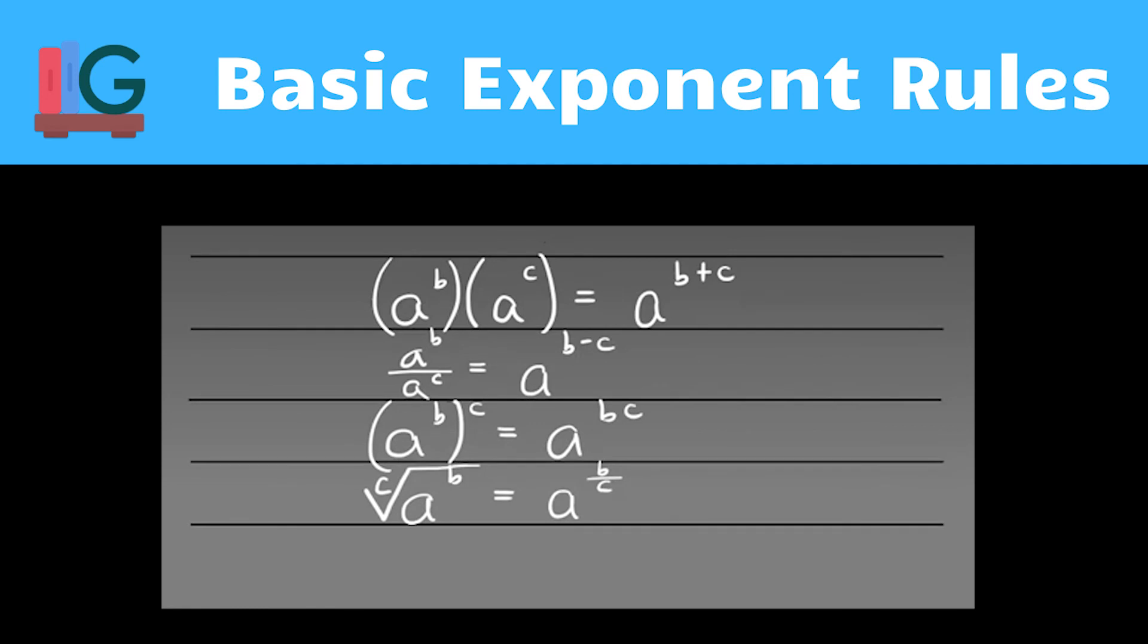Just to review that rule: if I have something with an exponent and I'm raising that to another exponent, I'm multiplying. But if I have something to an exponent and I'm taking a radical of that, I'm dividing by the thing that's in the radical, in this case the c. So these are the four rules that you need to know.